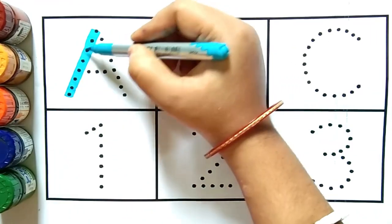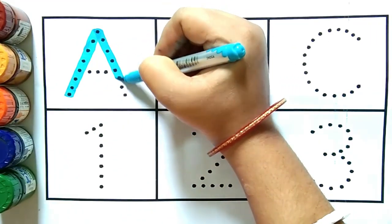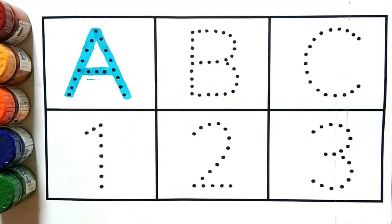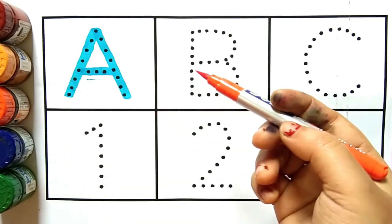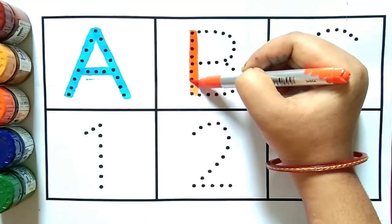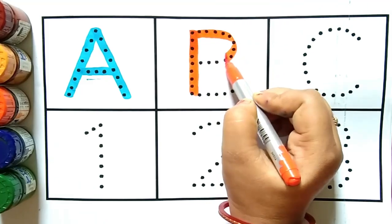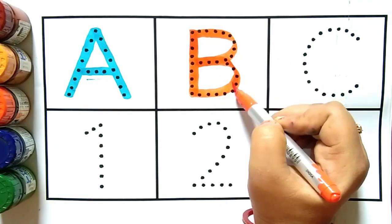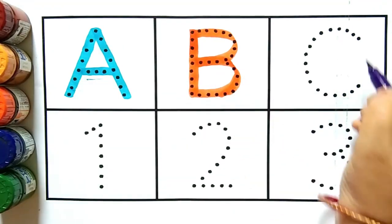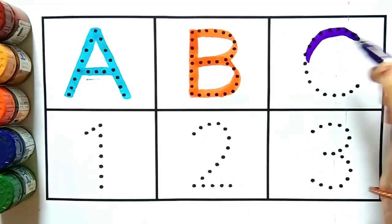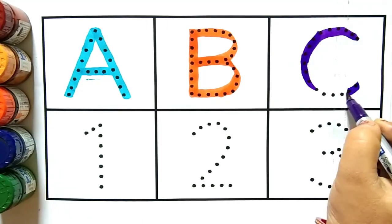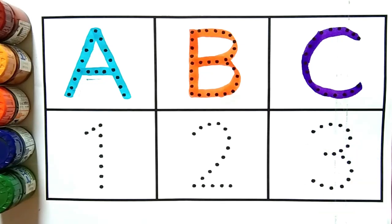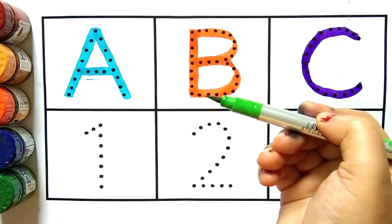Yeh hai A for astronaut. A for kya hota hai kids? A for hota hai astronaut. Orange color. A ke baad aata hai B, B for Ball, B for kya hota hai kids, B for hota hai Ball. Purple color. B ke baad aata hai C, C for Cave, C for kya hota hai kids, C for hota hai Cave. Light green color.